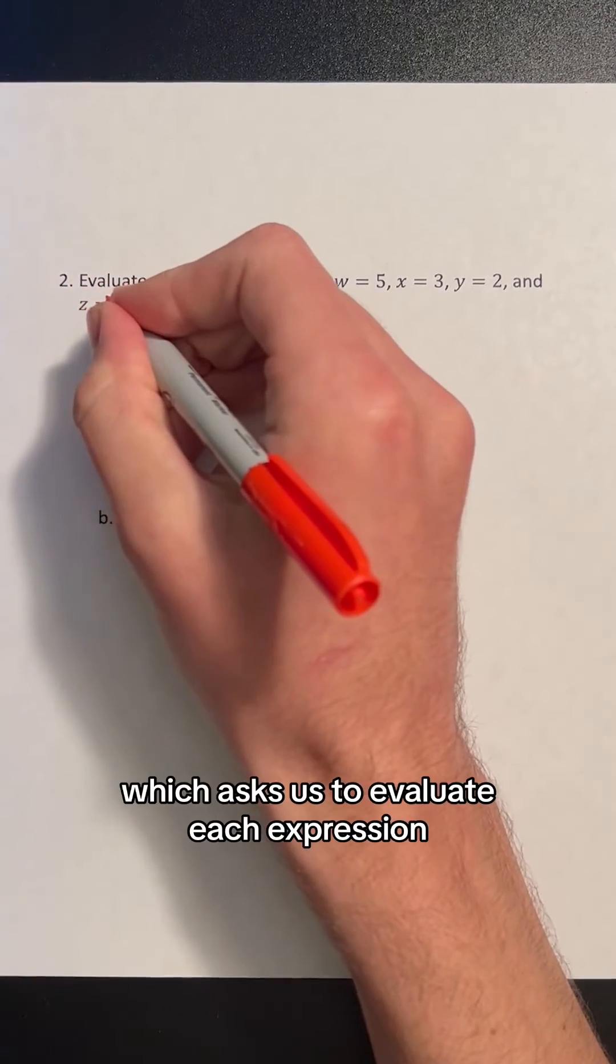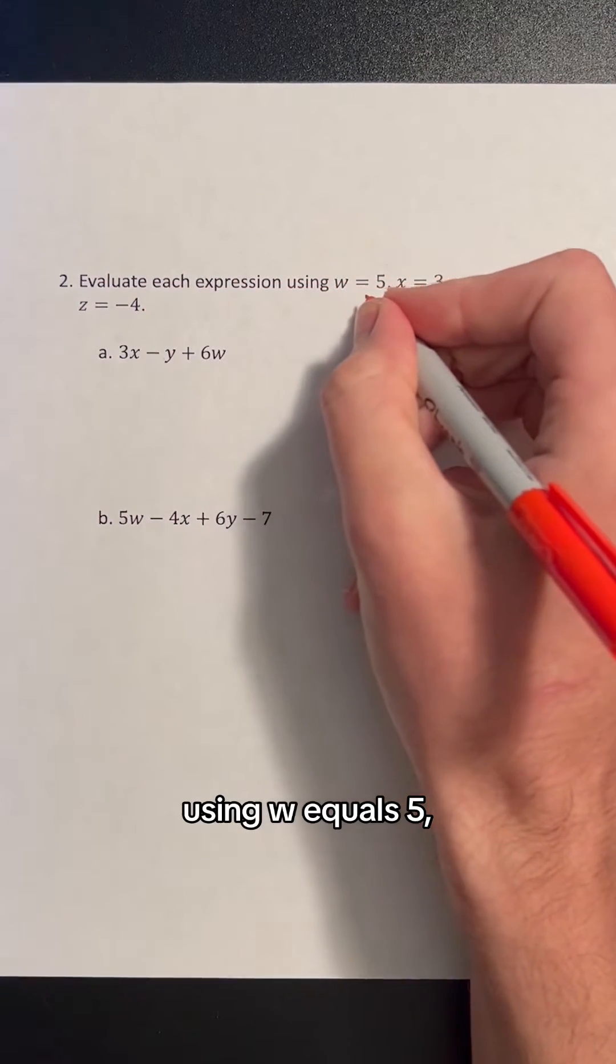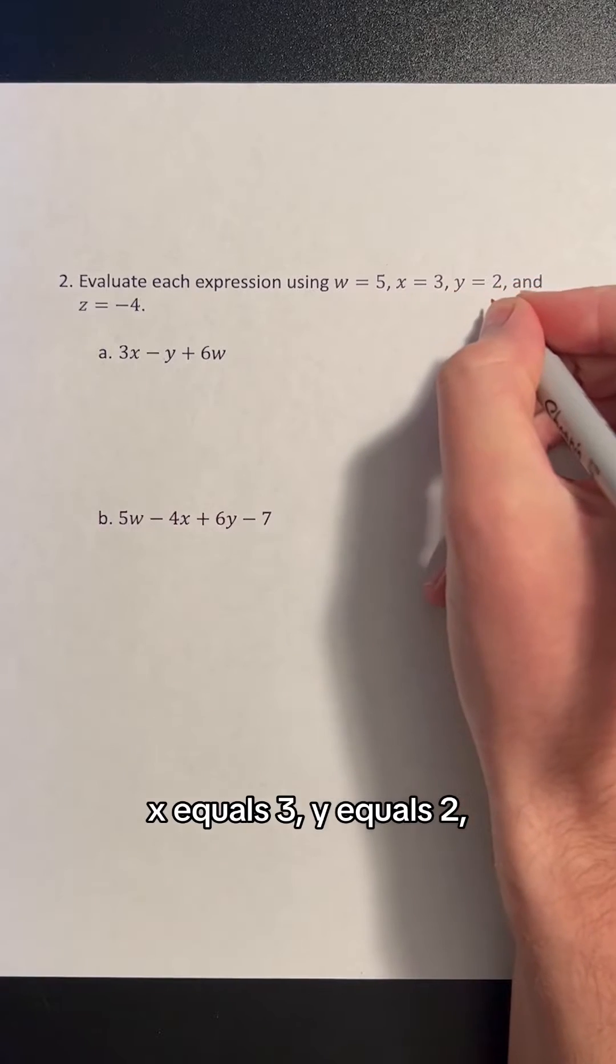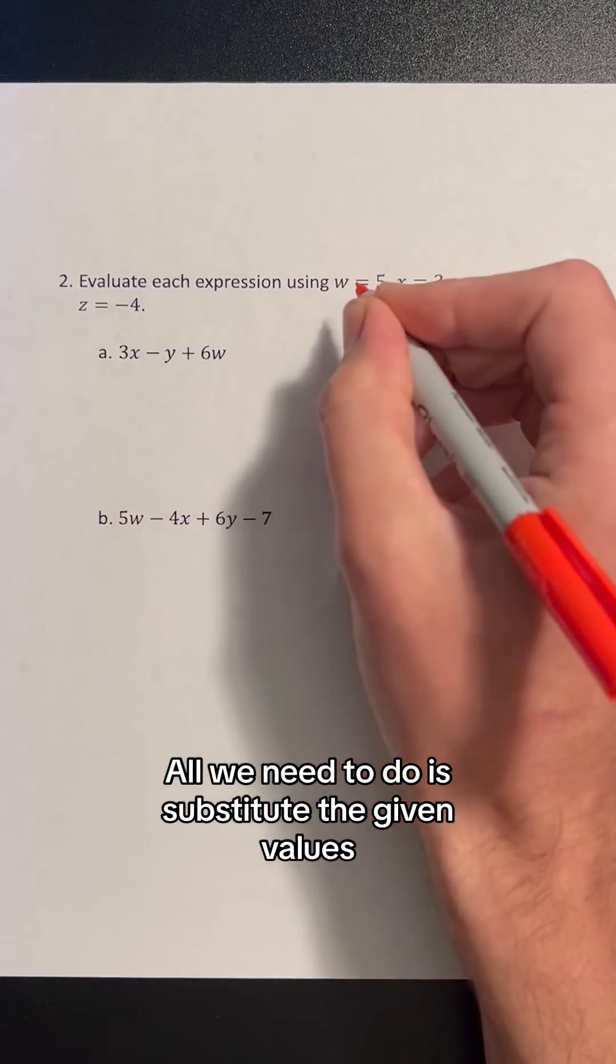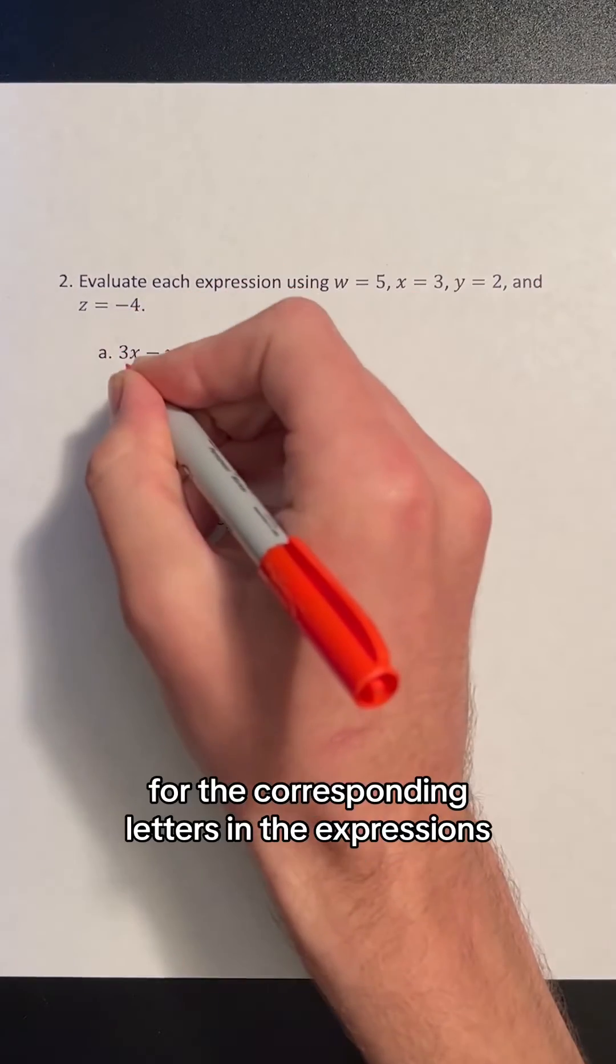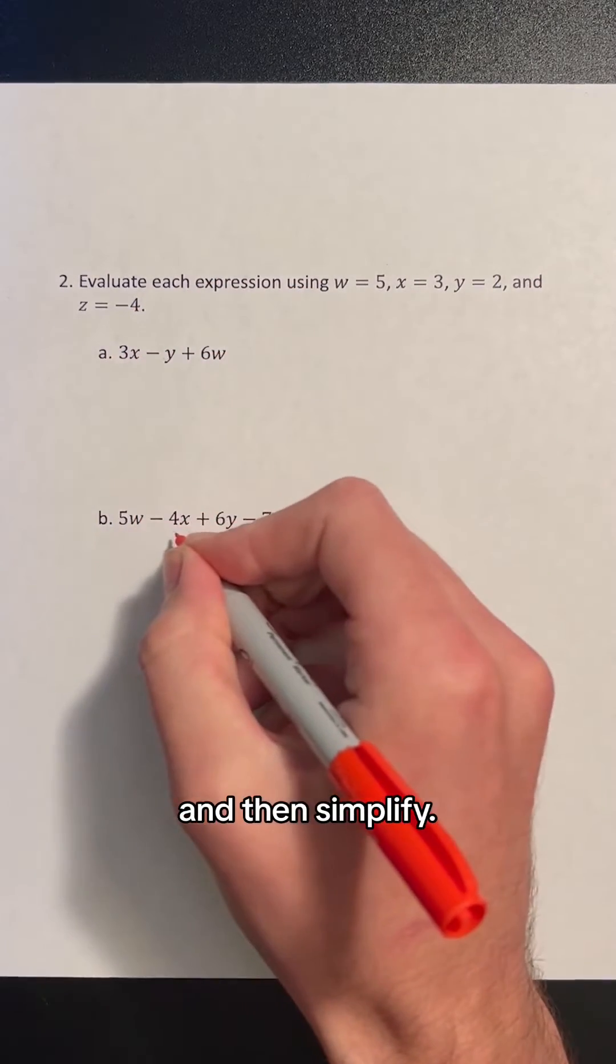Let's look at question 2, which asks us to evaluate each expression using w equals 5, x equals 3, y equals 2, and z equals negative 4. We're given two expressions. All we need to do is substitute the given values for the corresponding letters in the expressions and then simplify.